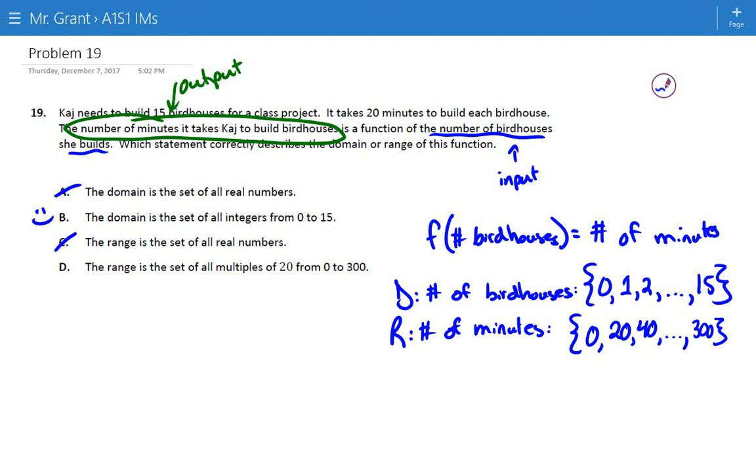And then D is where things get a little confusing. D says the range is the set of all multiples of 20 from 0 to 300, and that's actually correct.